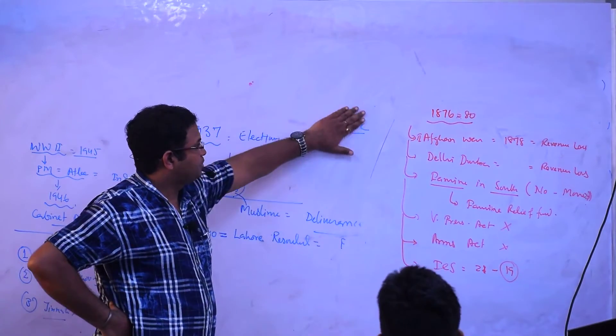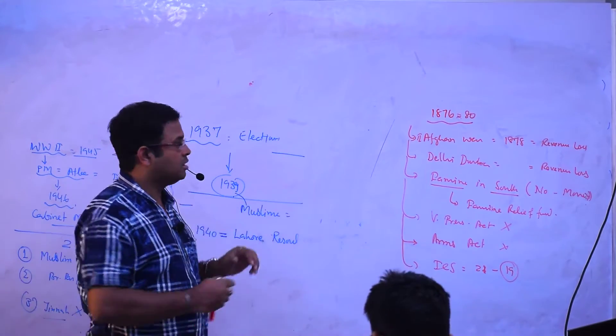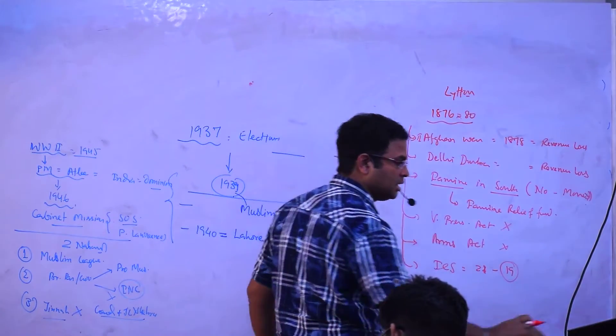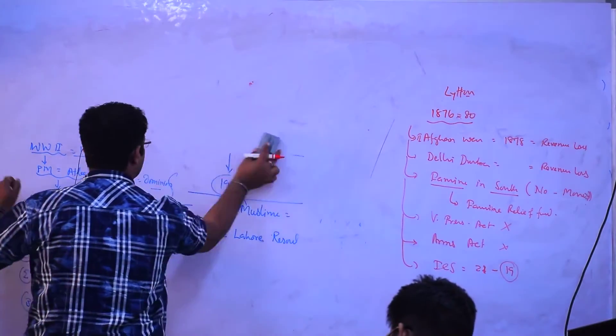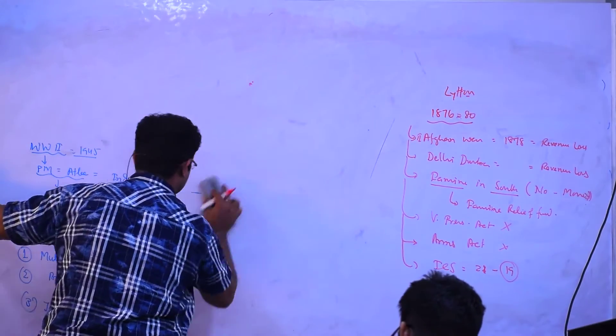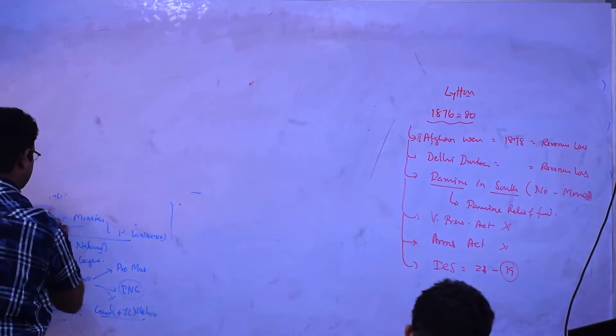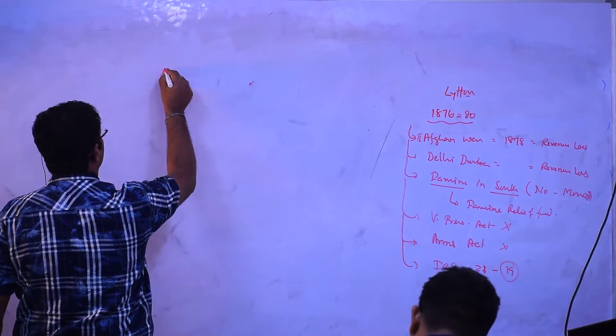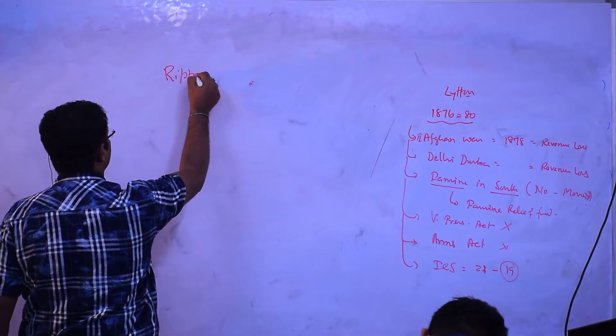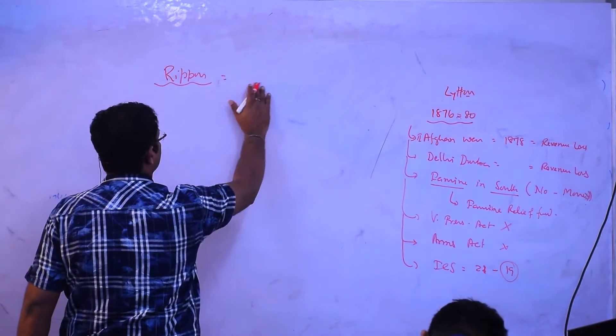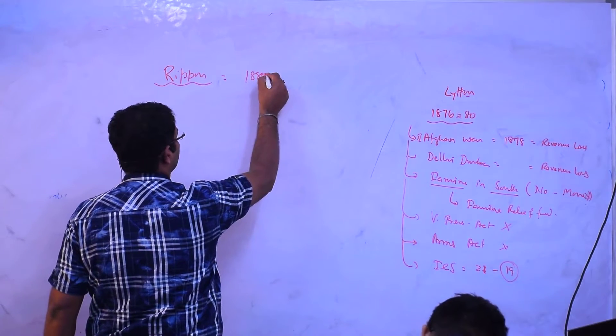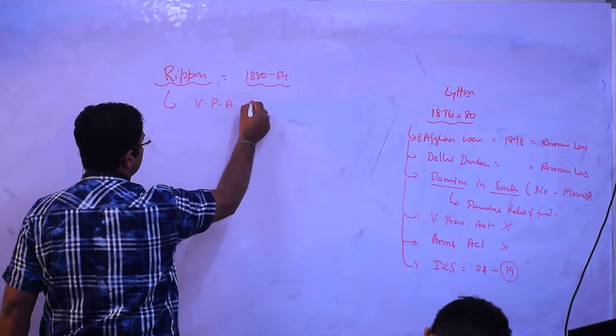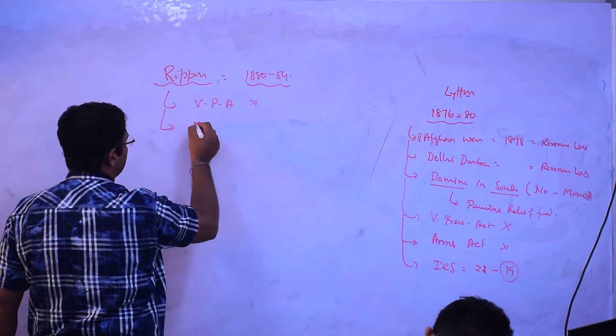So this is Mr. Lytton. And then another person who has also helped in understanding and spreading nationalism in India is Mr. Ripon. And Ripon was the person who has gone against this Vernacular Press Act and all. So I said that Ripon, and just after that Ripon came and he was a great reformer from 1880 to 84.